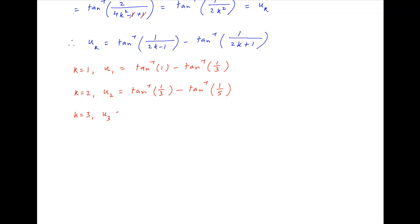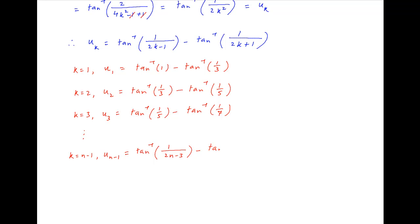When k equal to 3, u3 is equal to tan inverse 1 upon 5 minus tan inverse 1 upon 7, and so on and so forth. When k equal to n minus 1, the n minus 1th term is equal to tan inverse 1 upon 2n minus 1. And finally, when k equal to n, un is equal to tan inverse 1 upon 2n minus 1 minus tan inverse 1 upon 2n plus 1.